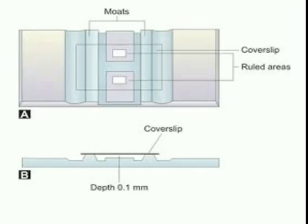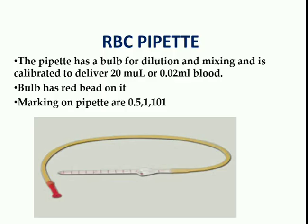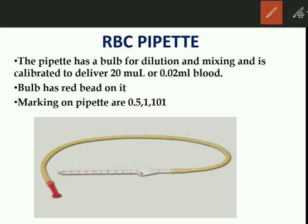This is how the coverslip is placed over the Neubauer chamber. Next, we need the RBC pipette. It has a bulb for dilution and mixing and is calibrated to deliver 0.5 ml of blood. It has a red-colored bead which helps in mixing of blood with the diluting fluid. The RBC pipette has markings at 0.5, 1, and 101.